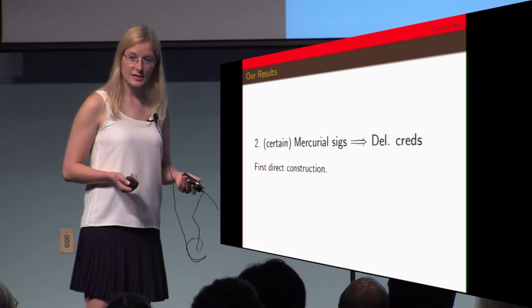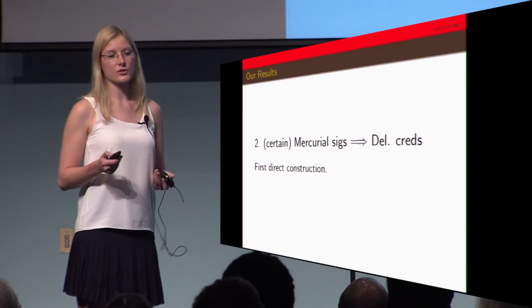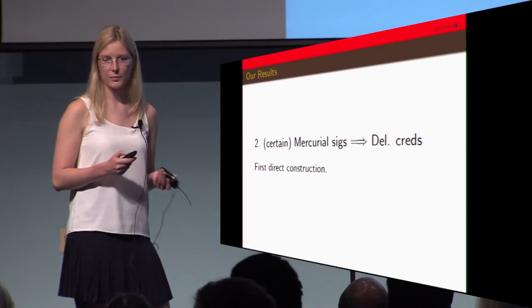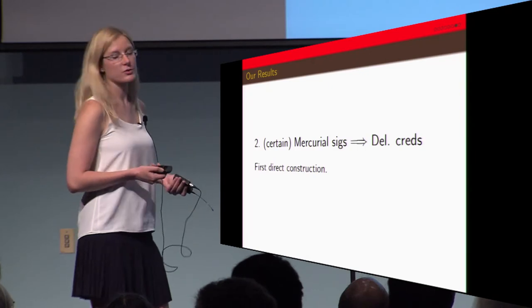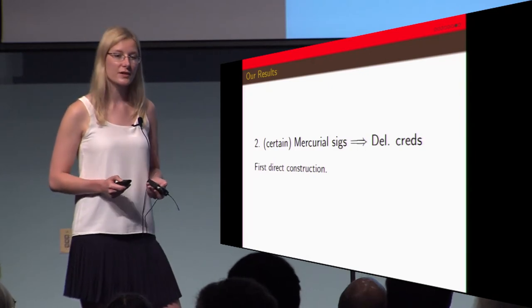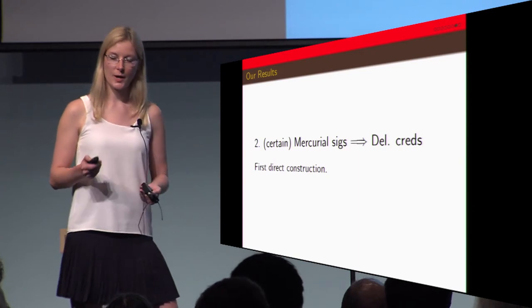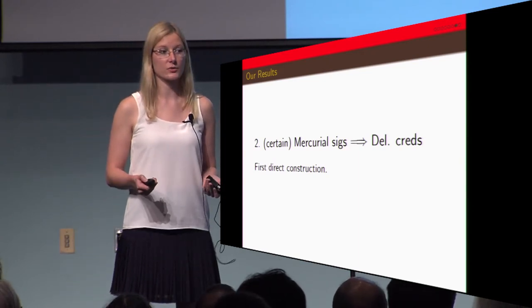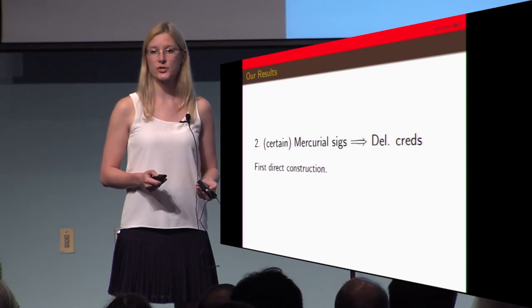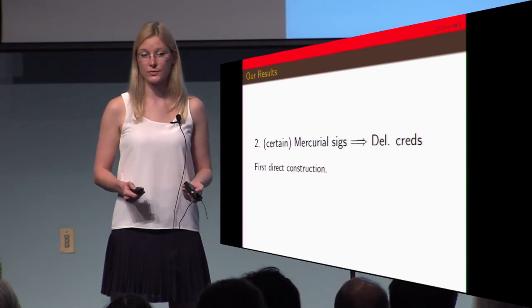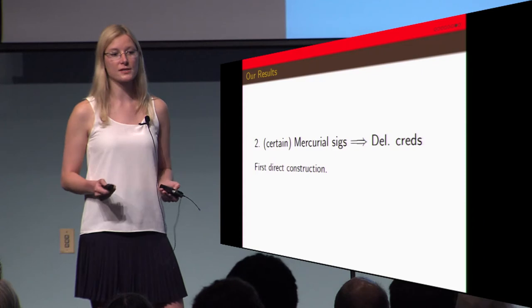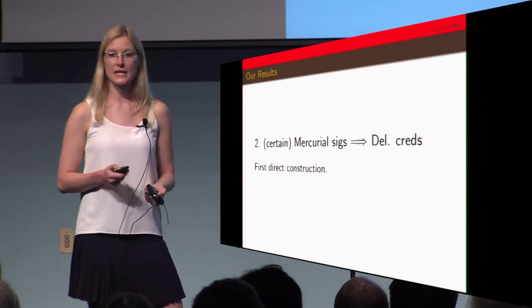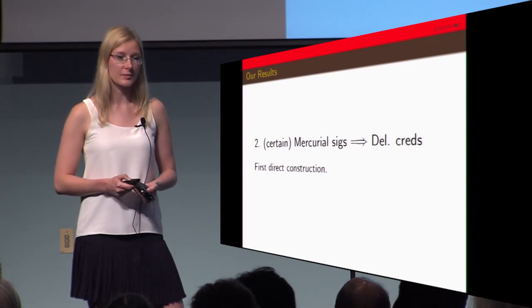Our second result is that for certain Mercurial signatures using the equivalence class I described, we're able to achieve delegatable credentials. This is important because in the seminal paper by Anna and Melissa Chase in 2006, when they introduced delegatable anonymous credentials, they had to use heavy machinery like non-interactive zero knowledge proofs. This is direct, quite simple, and very efficient. Each link in the chain can be represented by only five group elements.